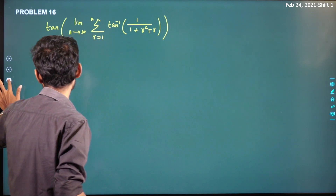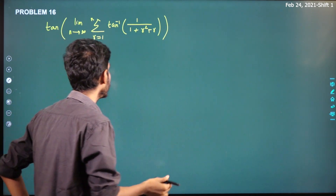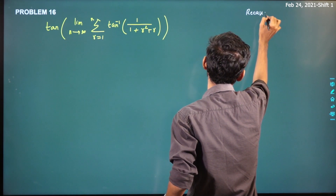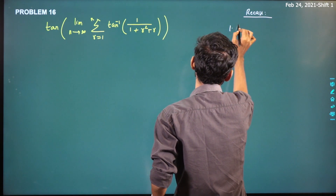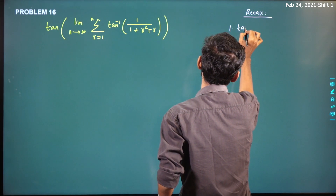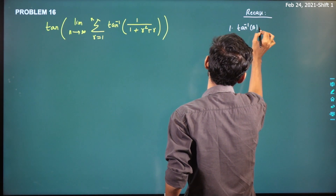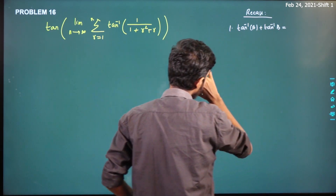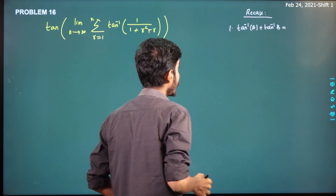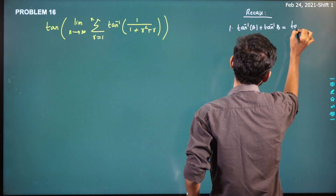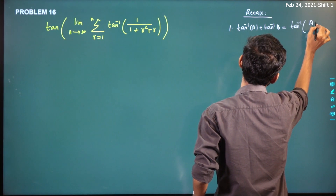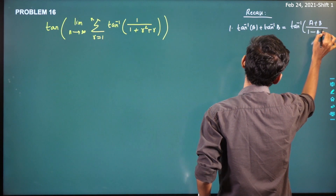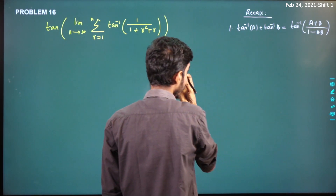So recall, we will start with two basic properties. Recall the model property: tan inverse of a plus tan inverse of b is equal to tan inverse of (a plus b) divided by (1 minus ab).